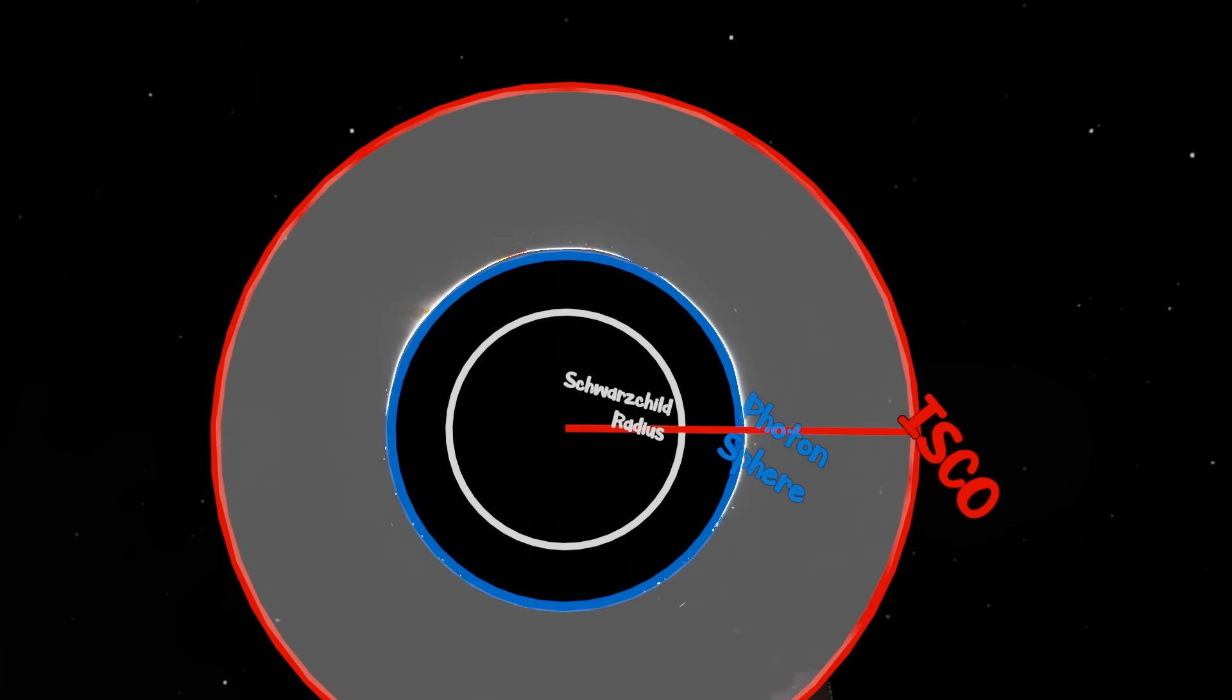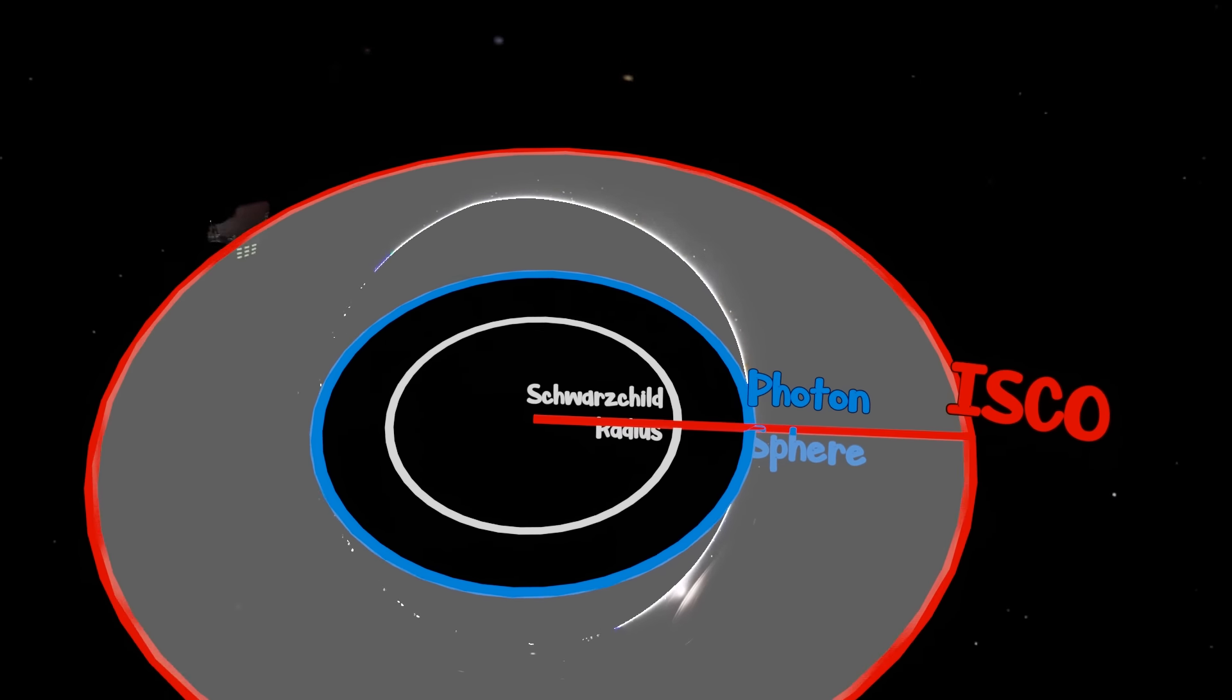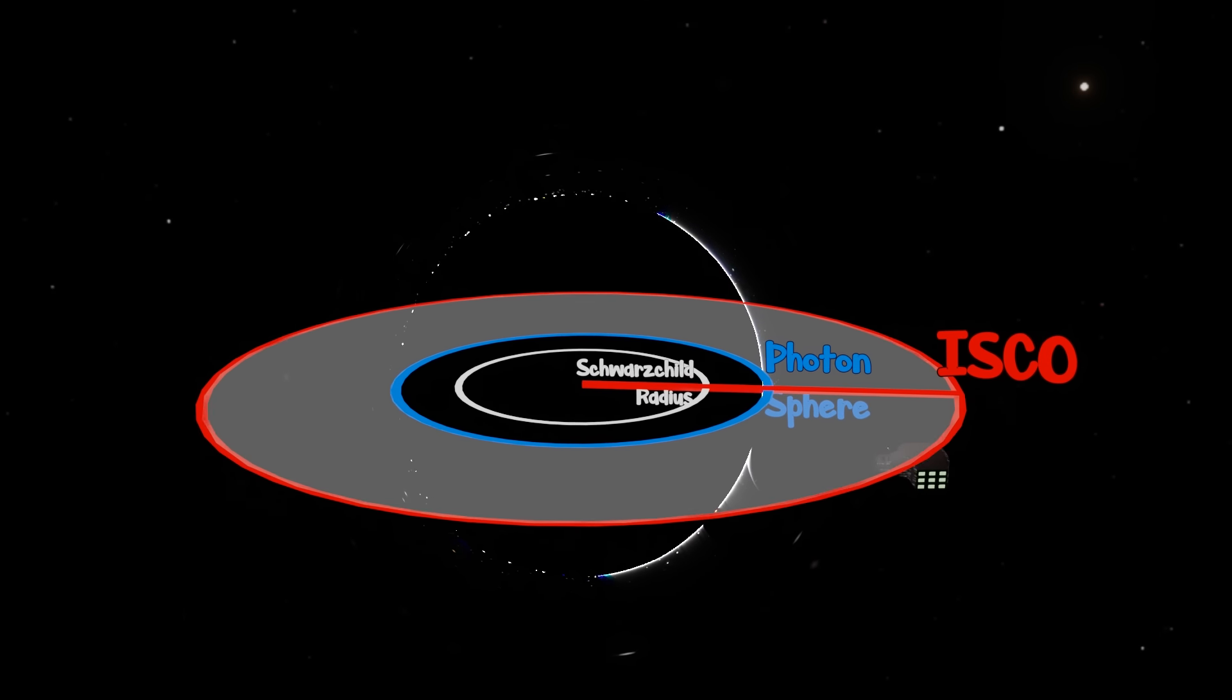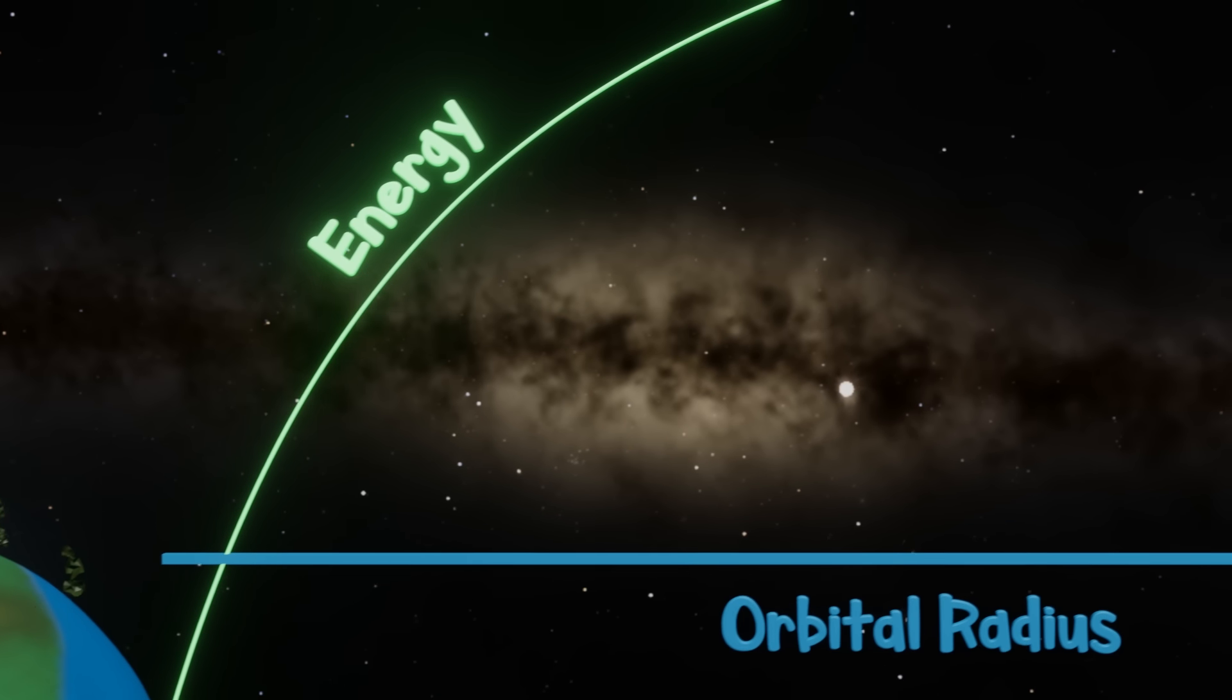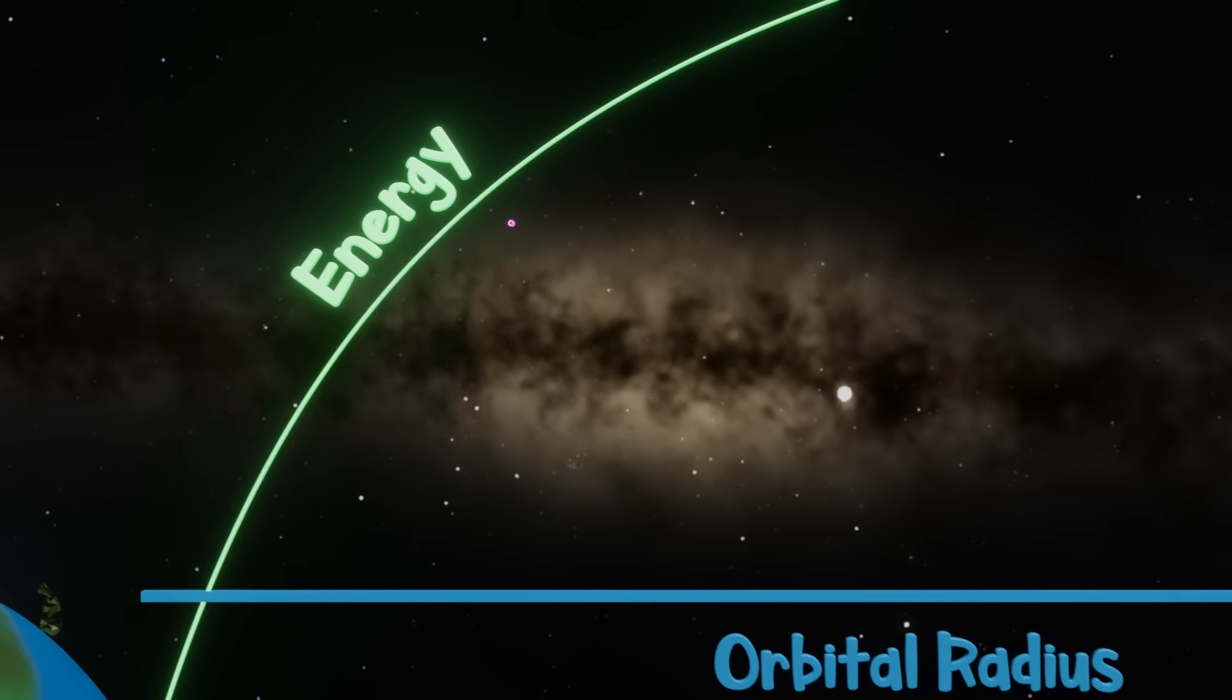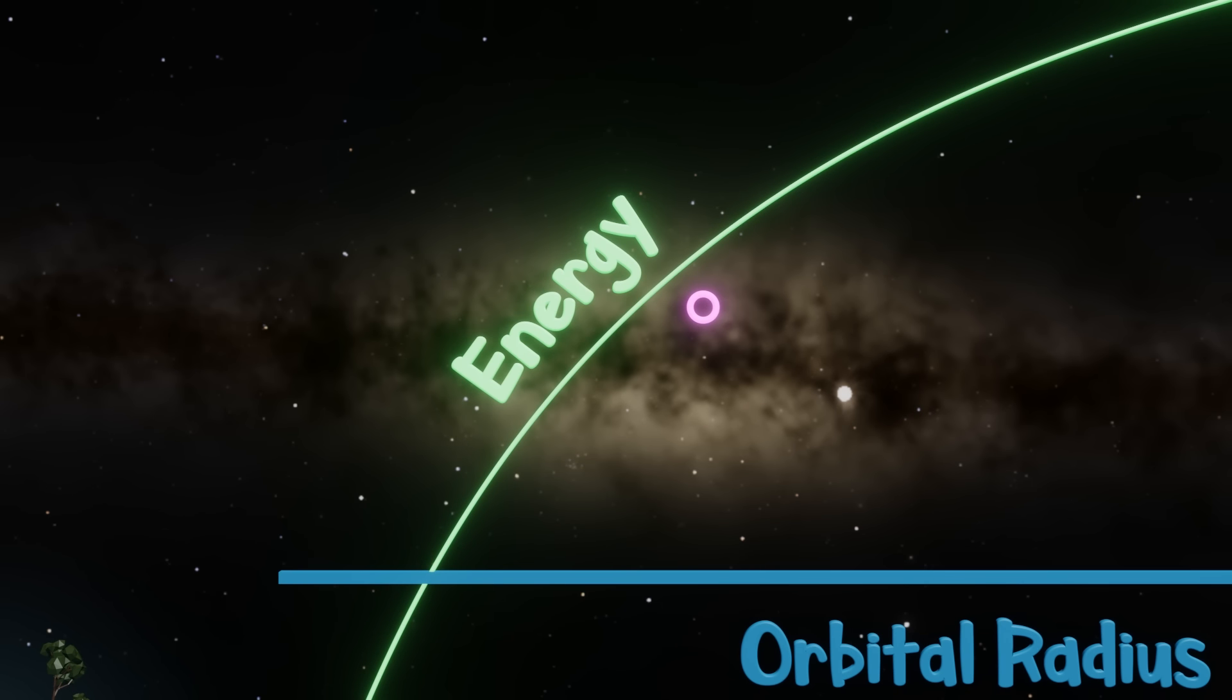Orbiting below the ISCO is possible, but due to the warping of spacetime and the need for more energy, these orbits are very unstable. Let's look at a graph to understand this. Normal circular orbital energy states follow this line. This is a self-correcting or stable system. If you are orbiting below the line, you don't have enough energy to orbit at that radius and thus you fall towards the source of gravity. Eventually you cross a point where you can orbit again.